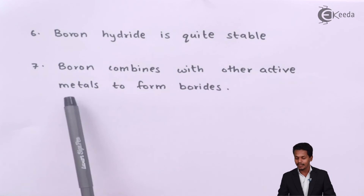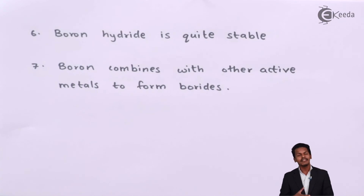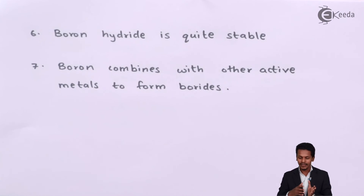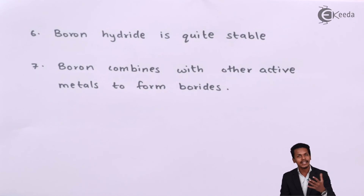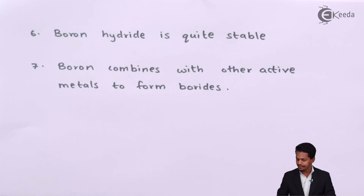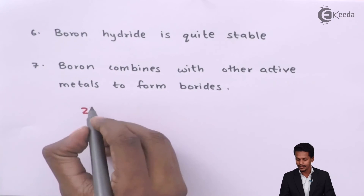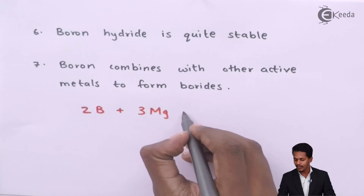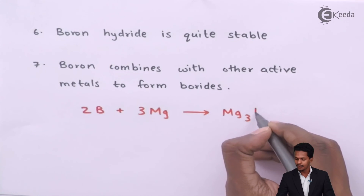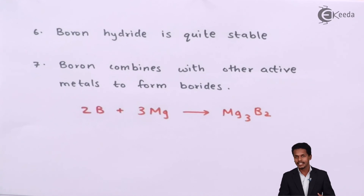The last point is that boron combines with active metals to form compounds called borides. The s-block elements are very active and electropositive. Boron, a p-block element, can react with these active metals to form borides. For example, 2 moles of boron reacting with 3 moles of magnesium produces Mg₃B₂, known as magnesium boride.